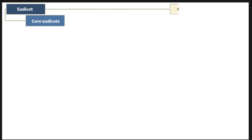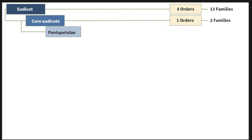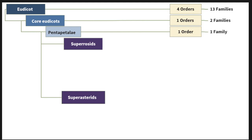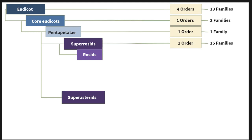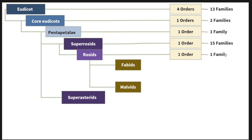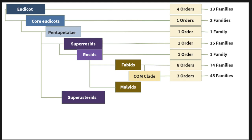Eudicots have been classified such that four separate orders come before the core eudicots, which comprise 13 families. Core eudicots are further classified into Pentapetale except one order with two families. Pentapetale is further classified into two clades called superrosids and superasterids, except one order with one family. Superrosids are comprised of rosids except one order which comprises 15 families. Rosids are further classified into fabids and malvids except one order comprising one family. Within fabids we can see eight orders comprising 74 families, and among these there is one more subclade called the COM clade with three orders and 45 families.